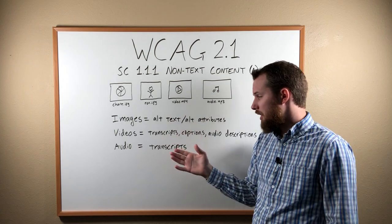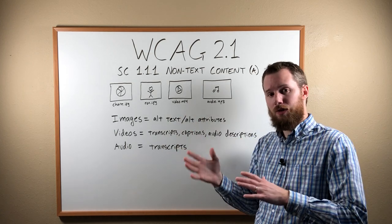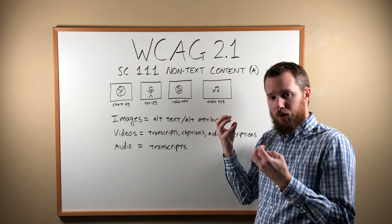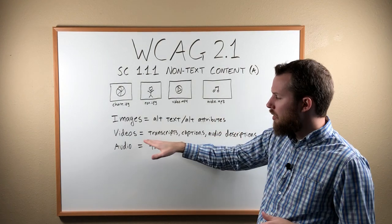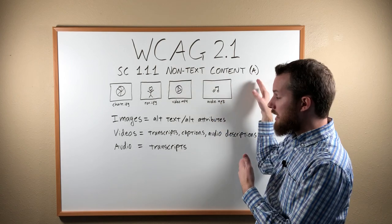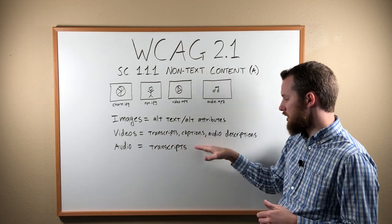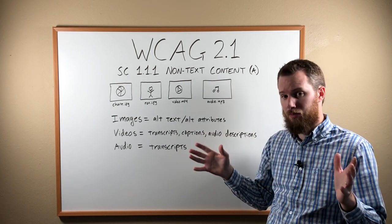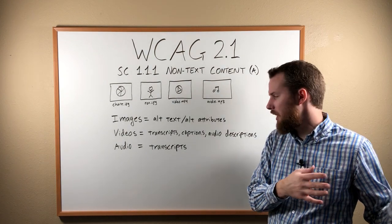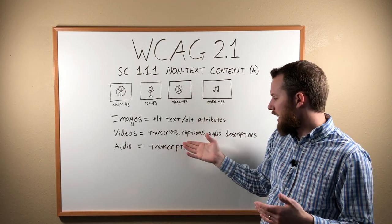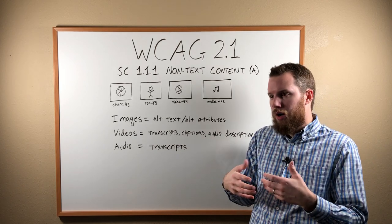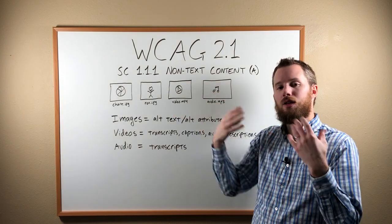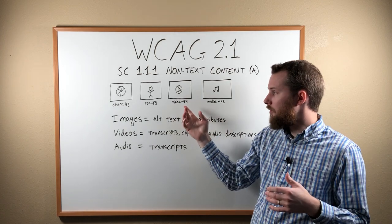Videos are a lot more complicated because they are inherently audible and visual. You can watch a video and glean information from what you're seeing, but it's also important to hear what's going on. The guidelines for non-text content state that you need to have transcripts, captions, and sometimes even audio descriptions. Audio descriptions are outside the scope of this video — they're more complicated and we'll cover them in other videos. A video needs to have a transcript and captions so that people who are blind and relying on a screen reader can have that reader tell them what's going on in the video.